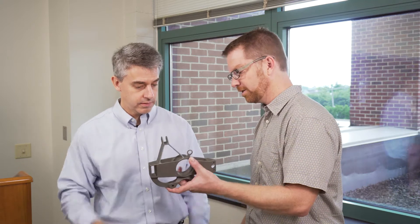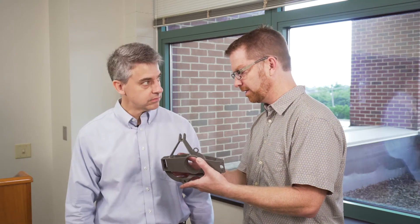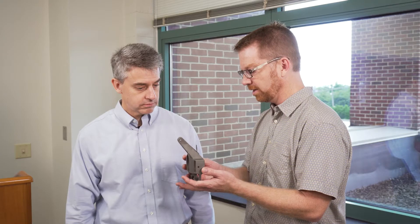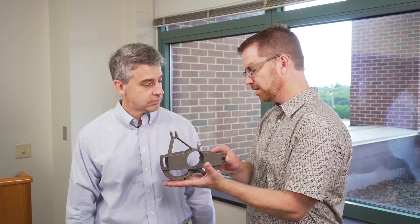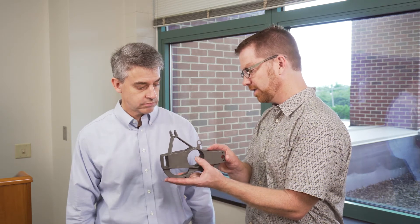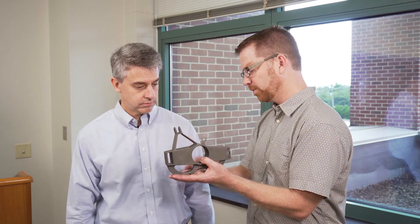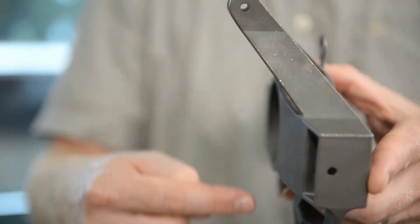Correct. So this was actually an upright for the Formula race car team here at Penn State. Vincent Marano was working with my colleague Todd Palmer to design and optimize this. They had used topology optimization to create this very lightweight structure, and EOS was printing it for us at the time and decided to orient it in this direction. One of the challenges with this now is you've got overhanging and support surfaces here that need support structures.